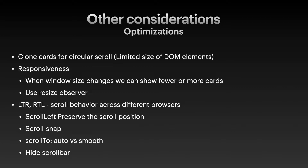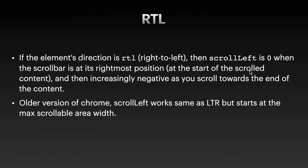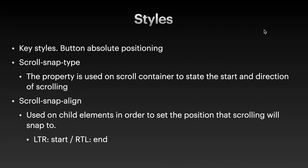Things get a little more complex when the container of the carousel widget defines the direction as right to left. This is because there are different behaviors across different browsers, and even for the same browser, new versions could have totally different behavior. Let's use Chrome as an example. In newer versions of Chrome, scroll left is zero when the scroll bar is at its rightmost position — meaning it's at the start of the scrolled content — and then increasingly negative as you scroll towards the end of the content. However, in older versions of Chrome, scroll left works the same as left to right, but starts at the max scrollable area width. Another common question is how to implement the left and right button. We probably want to position the button in the middle vertically, so we can use absolute positioning along with the top value.